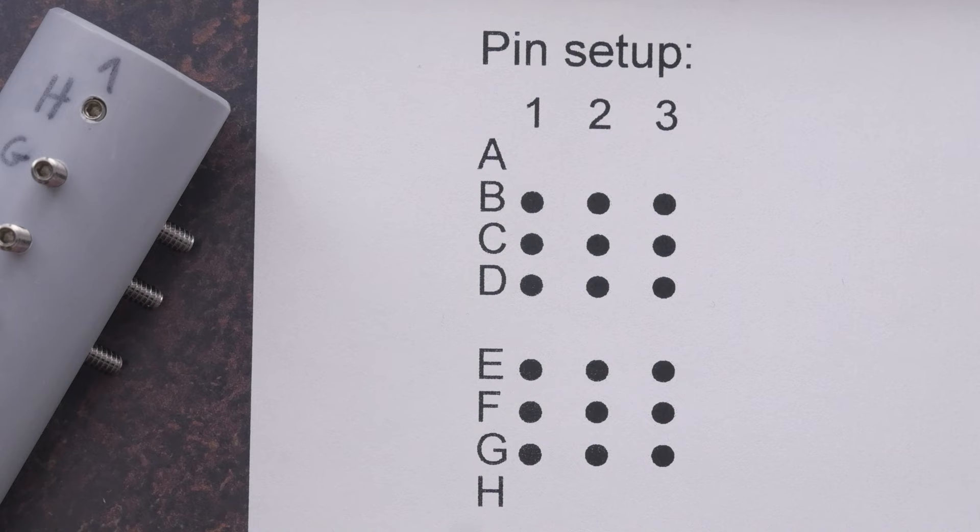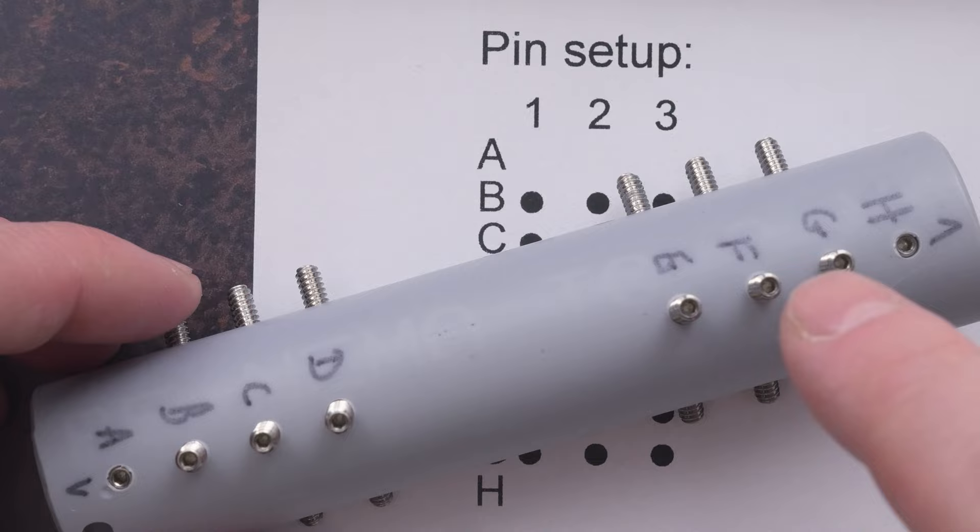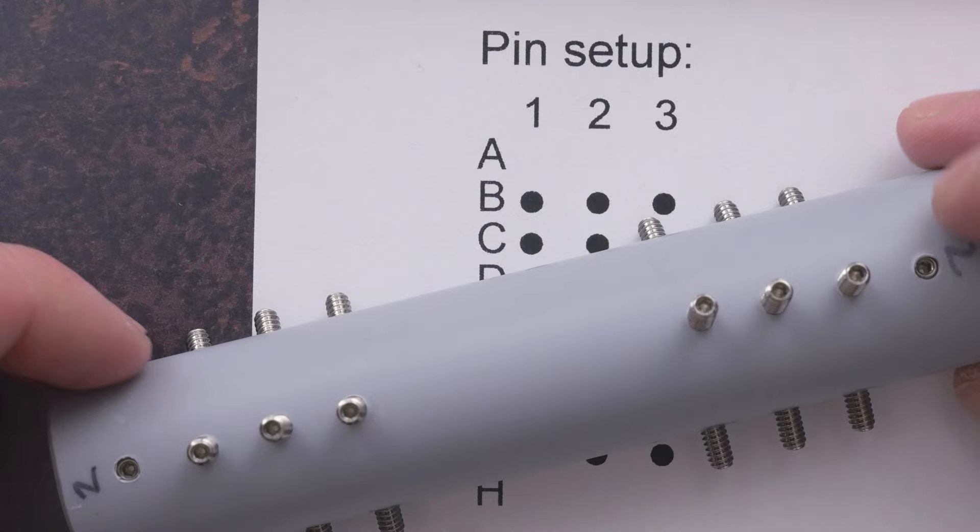The pin setup for our mandrel can be seen here. Essentially rows B, C, D, E, F, G are filled out. In practice, that means the inner three most rows on each side of our mandrel.